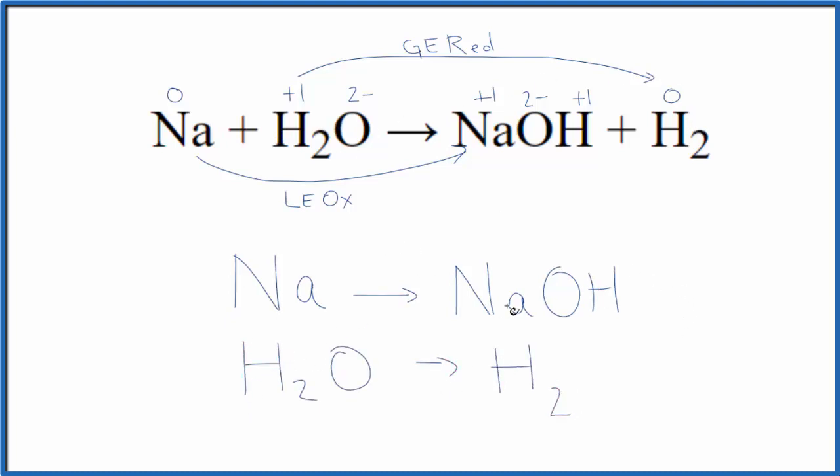At this point the atoms aren't balanced. We have an O and an H here, but not over here. We're going to assume we're working in acidic medium. That's what you do most of the time unless specified otherwise. So we can add water over here, H2O, and that'll give us our oxygen.